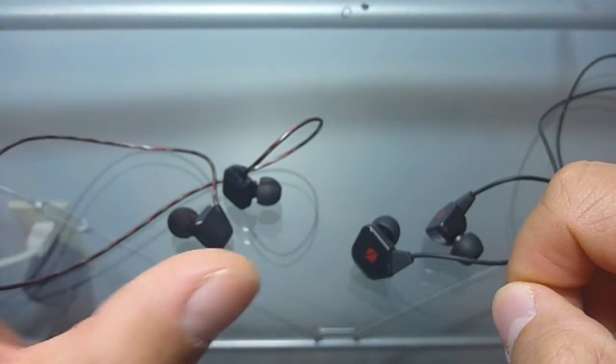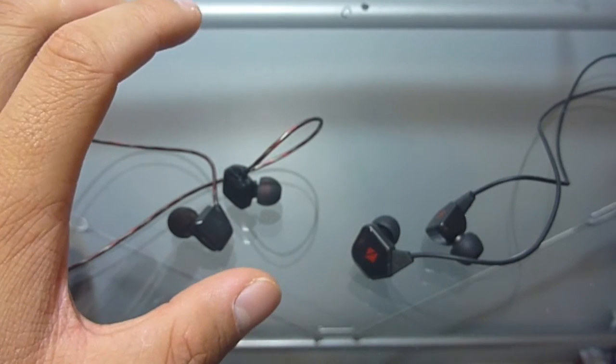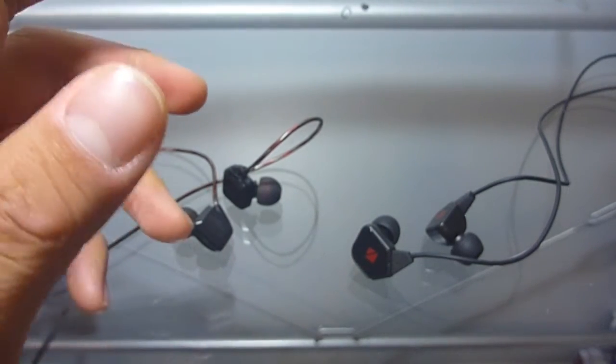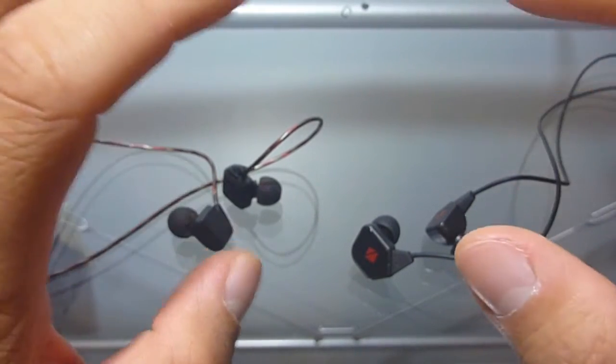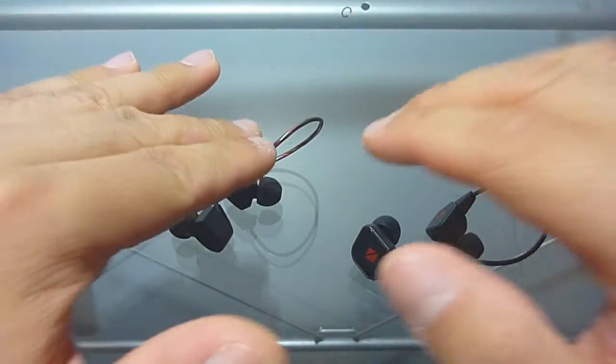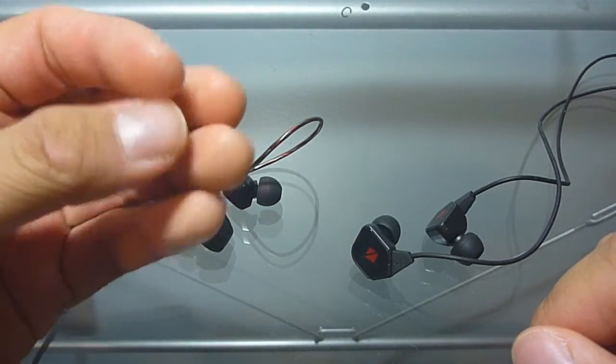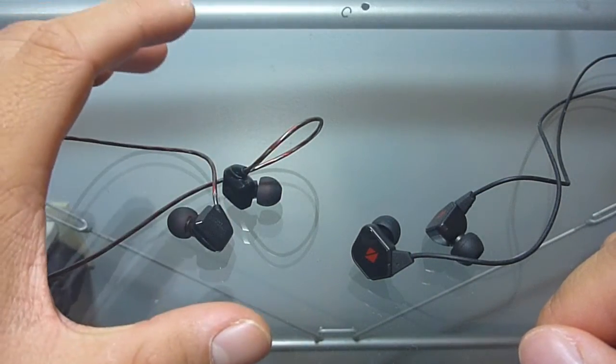So I think that the GR07s are definitely more punchier overall. It's more warm sounding and I think that they have more impact as well. So in terms of bass, I think both of these earphones are very tight in the bass and they both extend very low as well. But I do think that the GR07s wins out because it has a little more texture and it's just more dynamic sounding overall.